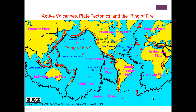Here is an interesting map of active volcanoes, plate tectonics, and the Ring of Fire. Along the plate boundaries is where you see most of these active volcanoes. Along the Pacific Plate, places like Hawaii and many Pacific islands are all volcanic islands formed due to active plate tectonics in this area.